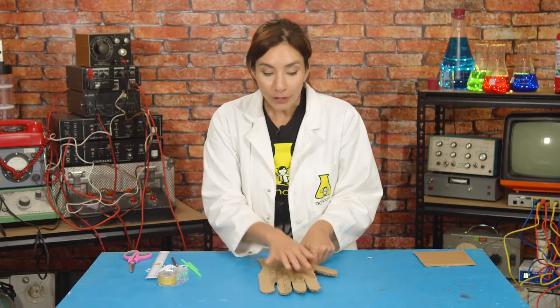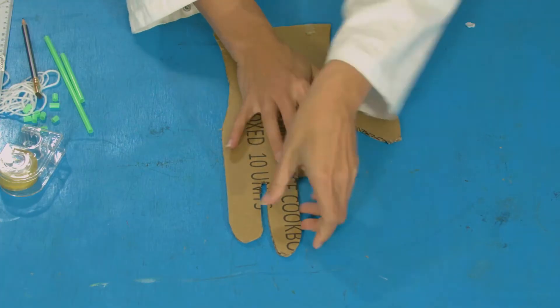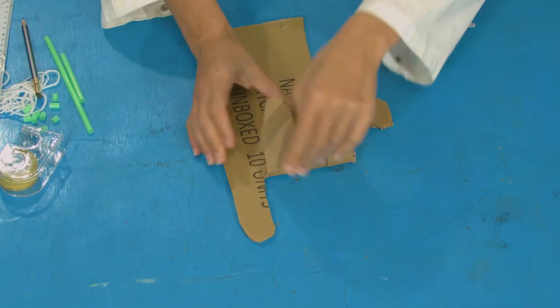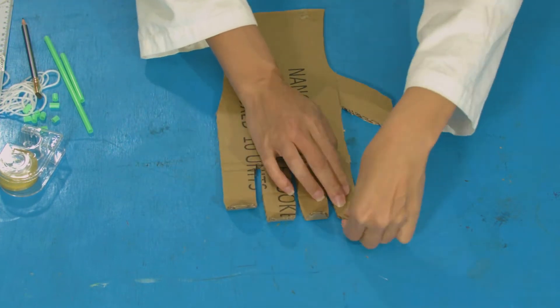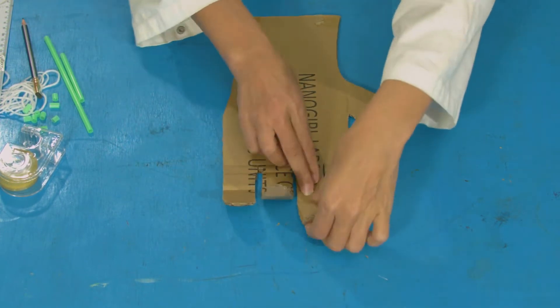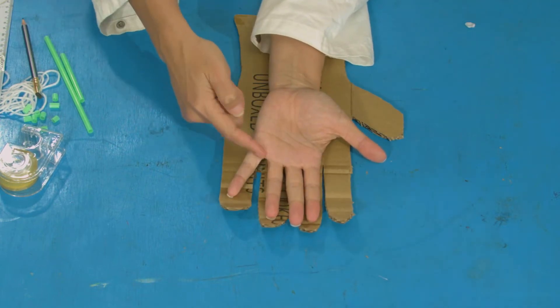Now on each of your fingers, you want to bend them forwards like this at the point that they stop here at the hand. And then you want to bend them at the tips, and then you want to bend them somewhere in between those two bends.